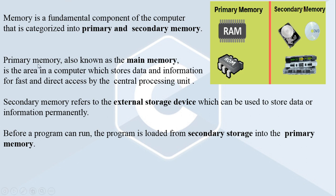Primary memory is also known as the main memory. It is a particular area in our computer which stores data and information for fast and direct access by the central processing unit. The CPU can access data and instructions directly and in a fast manner from the primary memory. Primary memory is used for temporarily storing the data and instructions which are needed by the CPU.